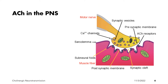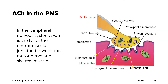In the peripheral nervous system, acetylcholine is also the neurotransmitter at the NMJ, or the neuromuscular junction, between the motor nerve and the skeletal muscle. The NMJ is the gap between our motor neuron and our skeletal muscle.